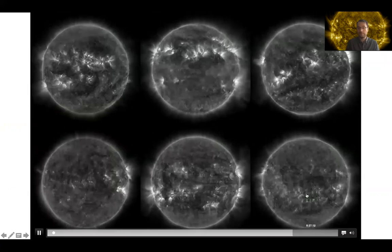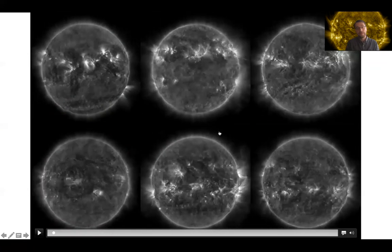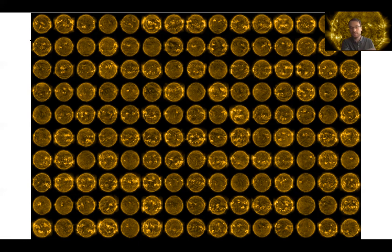This was only the very first approach we did, more than a year ago. Here's again an overview of all the generated images from the PGGAN approach, showing the diversity in images that have been generated. This shows that the network can actually capture all these different activity levels of the sun and generate images with very low or very high activity.